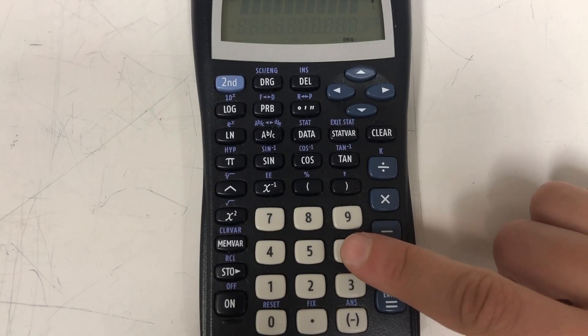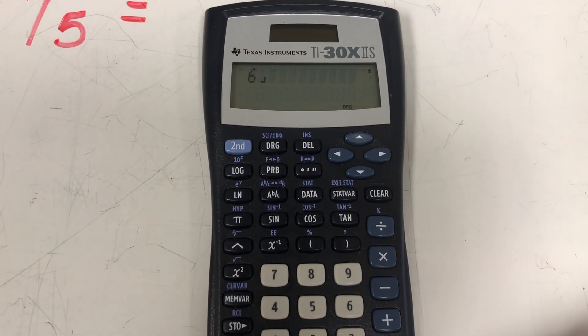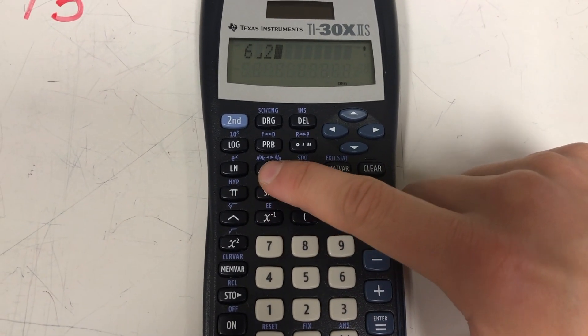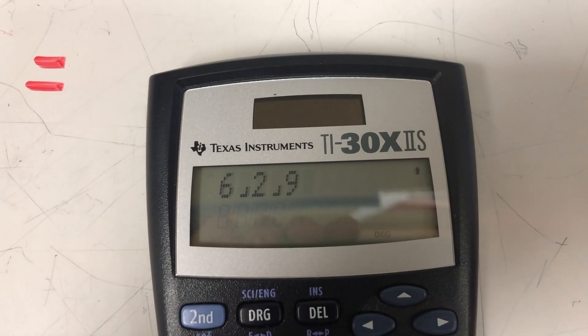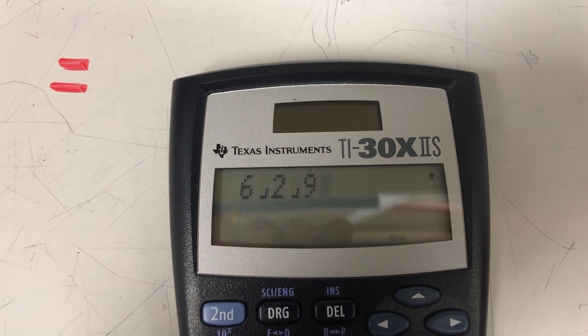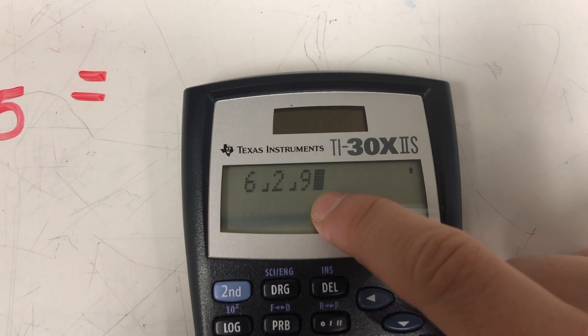We're just going to type in our whole number first. So six, then we're going to hit the fraction button and then type in our two-ninths. So two, fraction button again, nine. It's going to look like this. It might look a little bit confusing to you, but your calculator is programmed to understand that this is six and two-ninths.